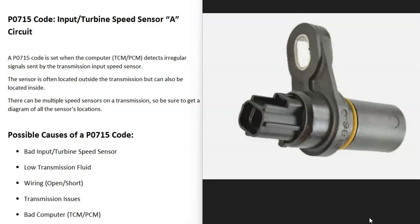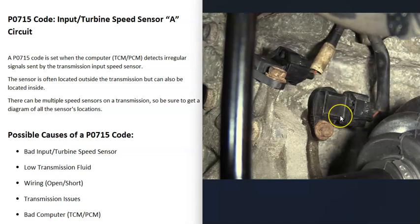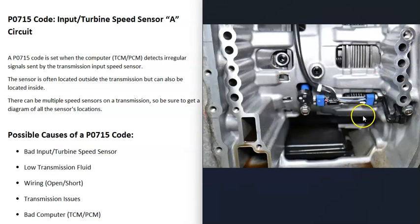Sometimes these sensors can be located on the outside of the transmission, which is fairly common. If located on the outside, it's usually straightforward to check, test, or replace. But if it's located inside the transmission, it's going to be much harder to replace and test.